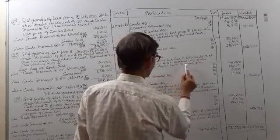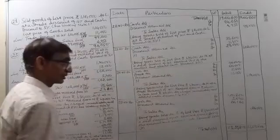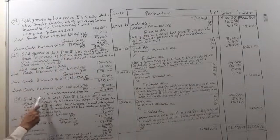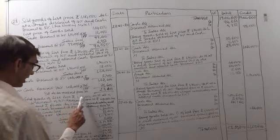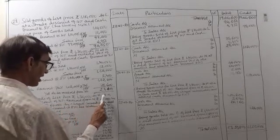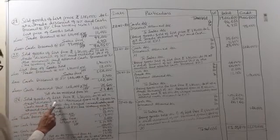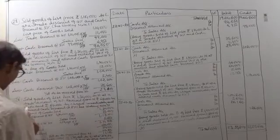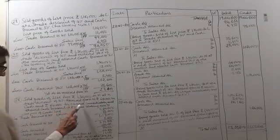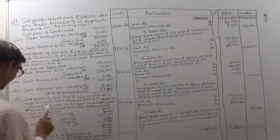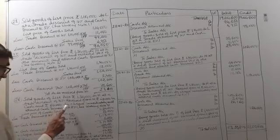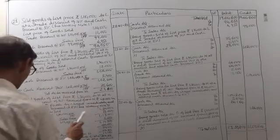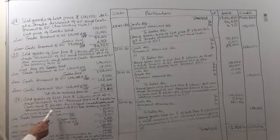Transaction 24: sold goods of list price rupees 1,30,000 to N at a trade discount of 10%. Received from N rupees 40,000 in cash and rupees 60,000 by cheque immediately, and allowed cash discount at the rate 5%. See working note 3. List price of goods sold was 1,30,000.